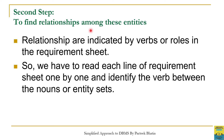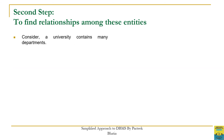Entity sets are the nouns in the requirement sheet, connected through verbs or roles — these verbs indicate the relationships among entities. In this step we again reread all the requirements one by one, but now our focus is on verbs instead of nouns. In the first step our focus was on nouns to identify entity sets; in this step the focus is on verbs to identify relationships among those entity sets.